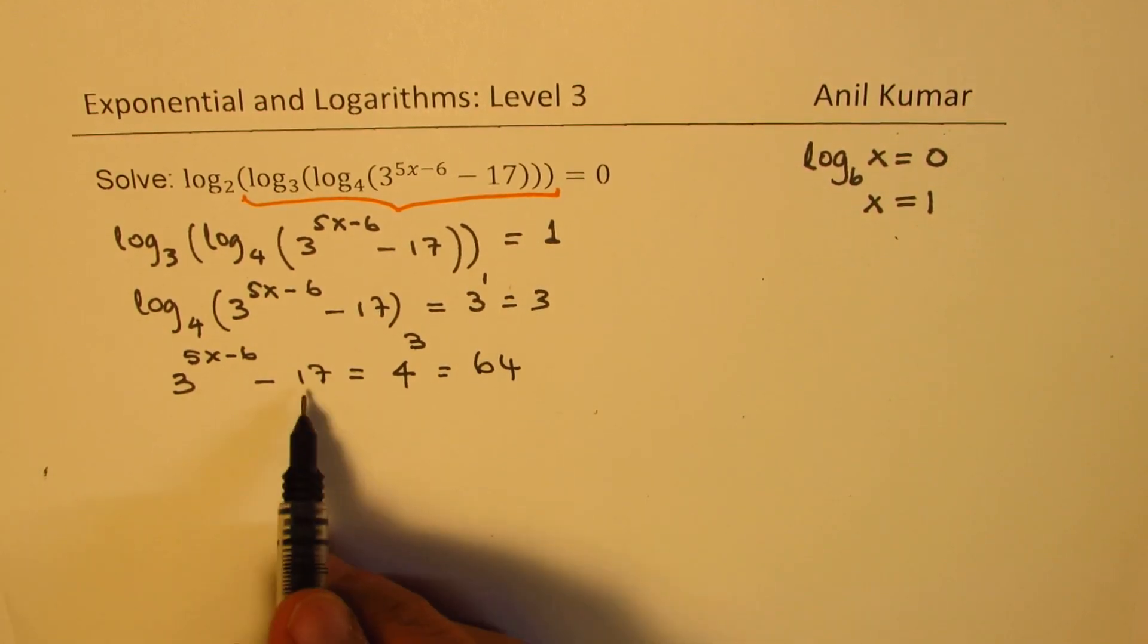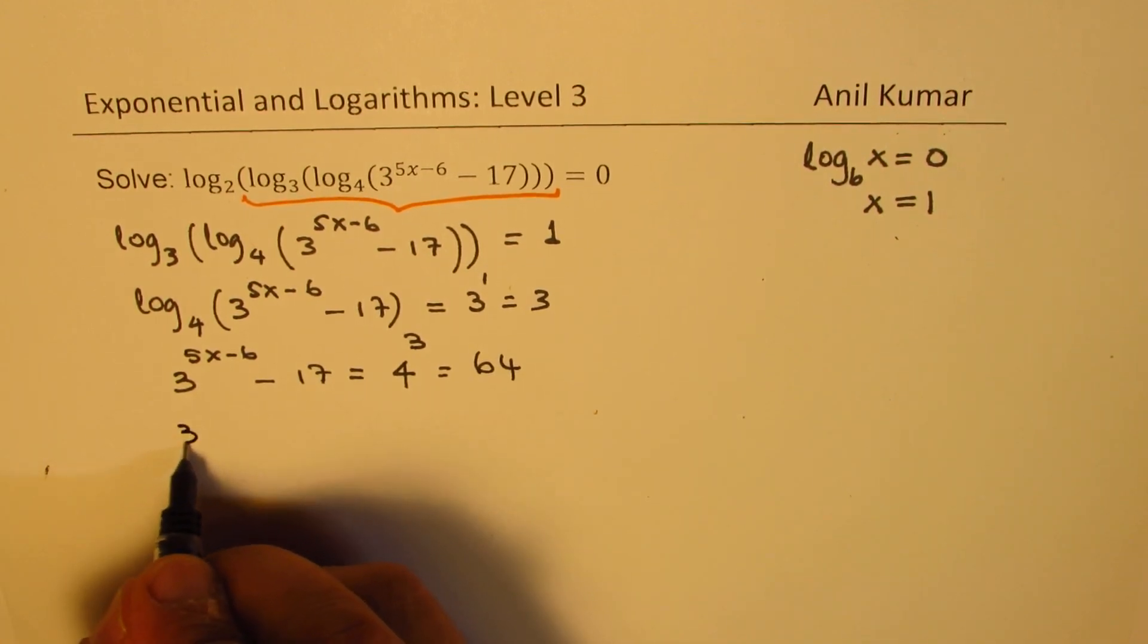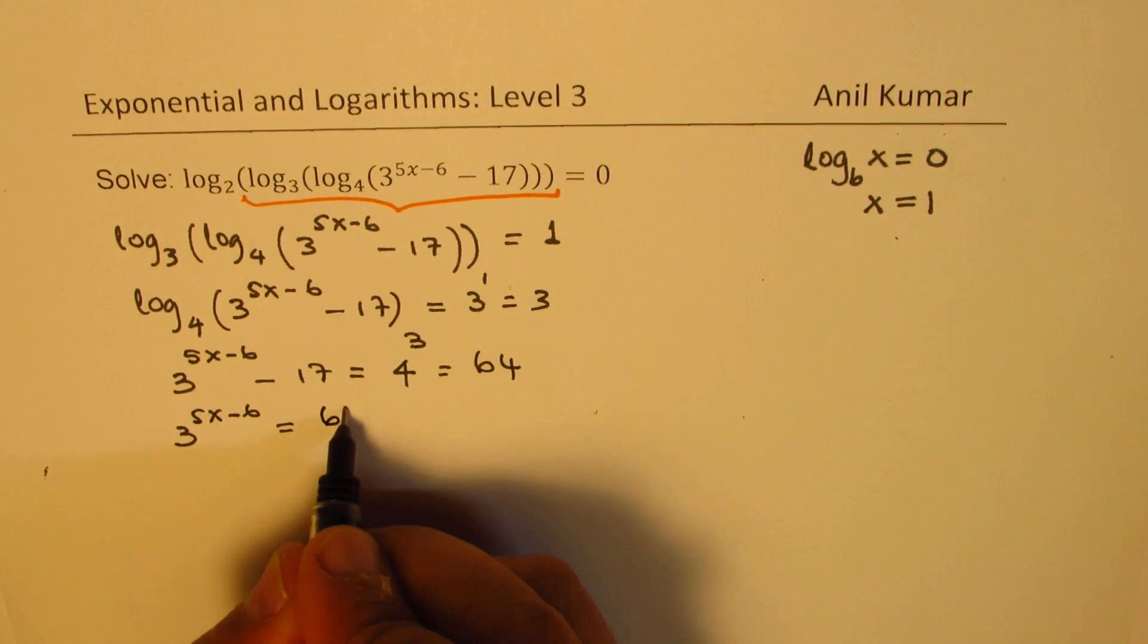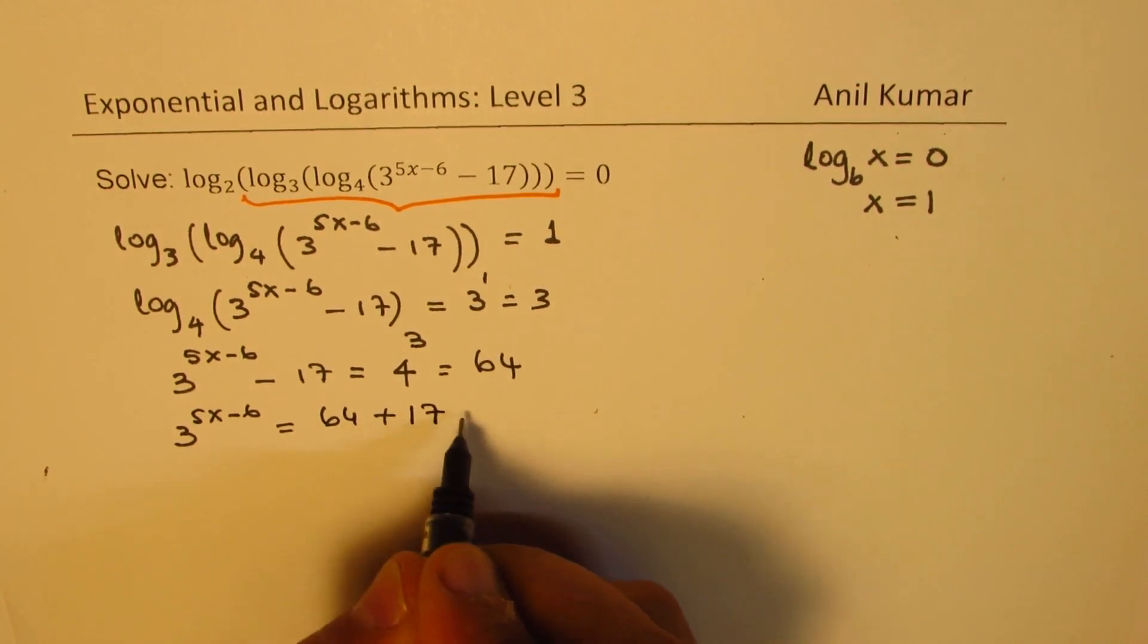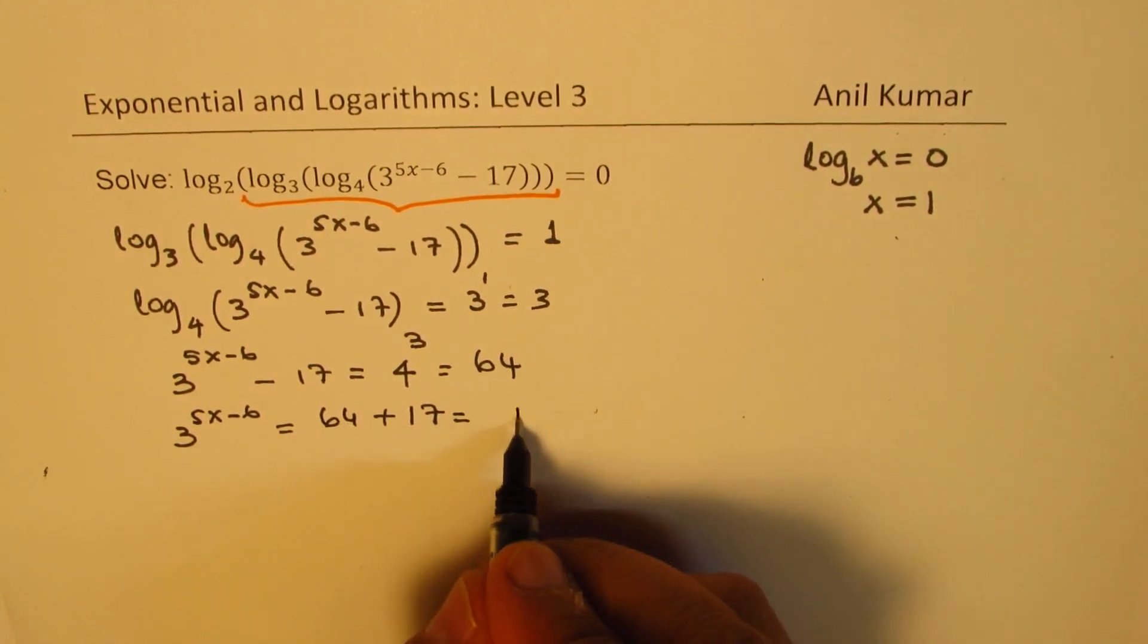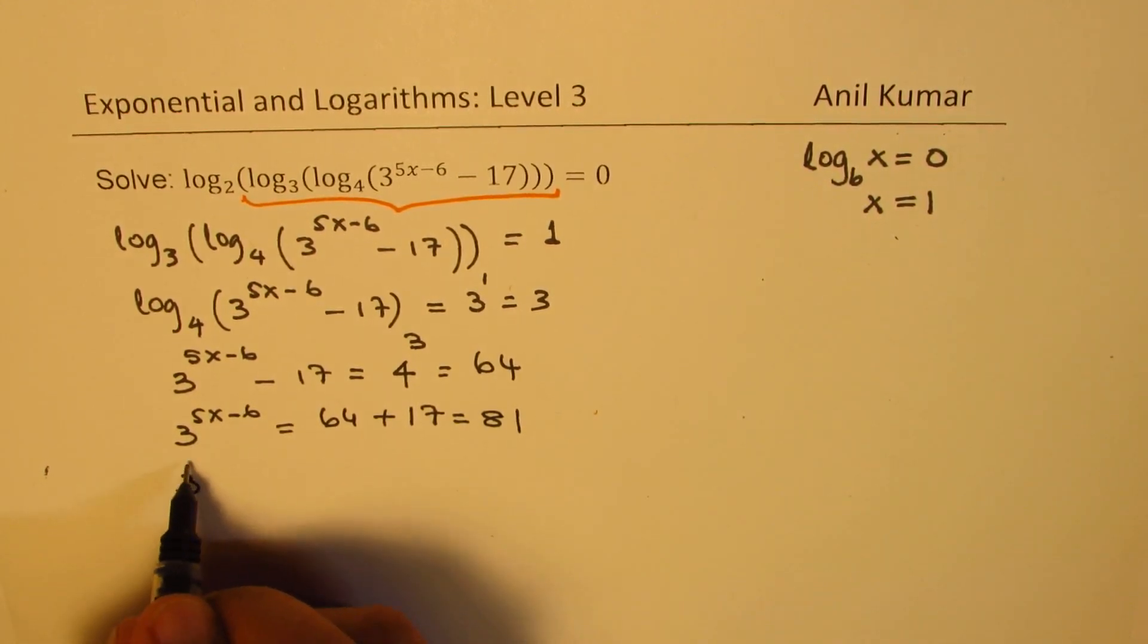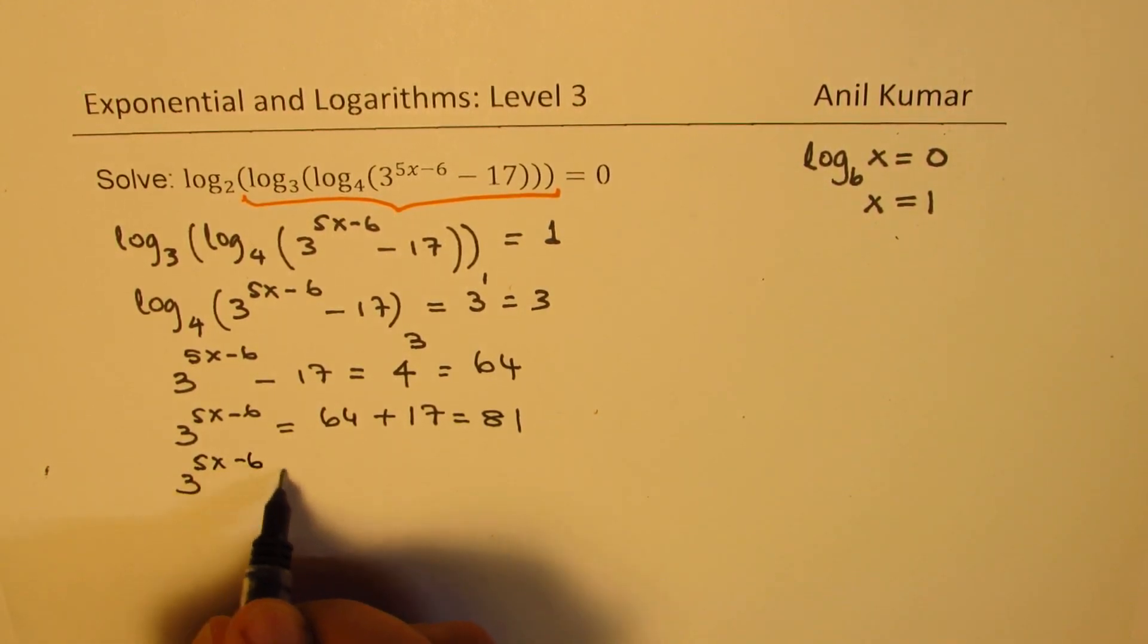We can take 17 to the right side, so we get 3 to the power of 5x minus 6 equals to 64 plus 17, which is 81. So we get 3 to the power of 5x minus 6 equals to 81.